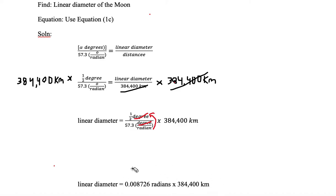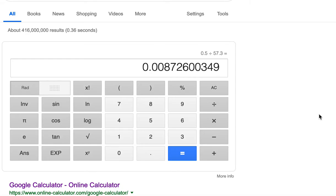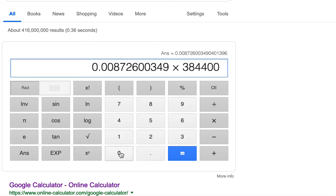Now let's multiply this on Google calculator. We multiply 0.008726 by 384,400 and we get a number of 3354.